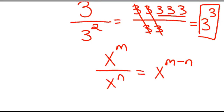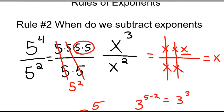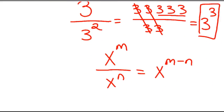You can see that here: 5 minus 2 — this is 3 to the 5 minus 2 power, which is 3 to the third power. Working back, x to the 3 minus 2 power is x to the first power. And here, 5 to the 4 minus 2 power is 5 squared. So we're subtracting our exponents as long as our bases are the same.